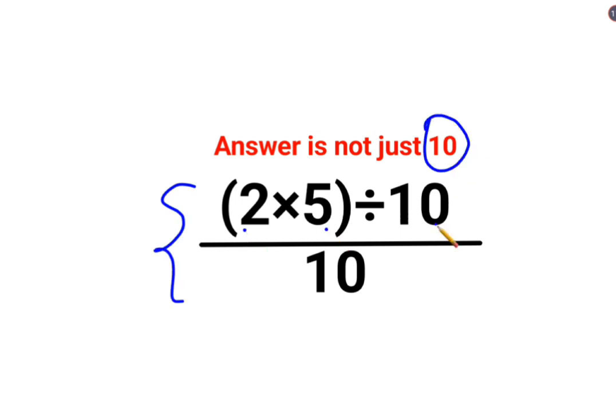So we have 2 multiplied by 5 divided by 10 divided by 10. So they thought that this and this gets cancelled because this is a part of the numerator. Therefore, you're just left with what? 2 multiplied by 5 which gets you 10. No, that is incorrect.